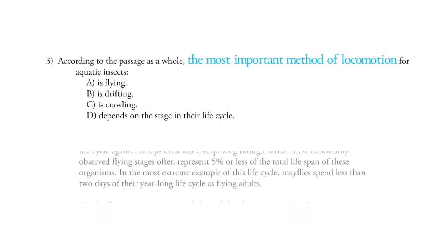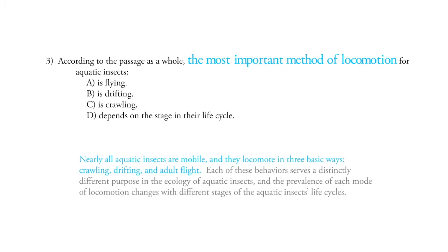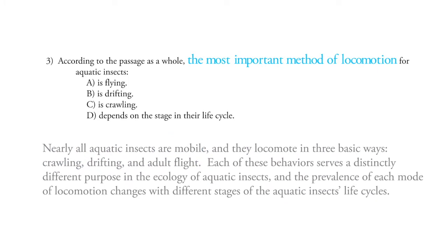Instead, what you do see is that the second paragraph, which is only two sentences, says, nearly all aquatic insects are mobile, and they locomote in three basic ways, crawling, drifting, and adult flight.